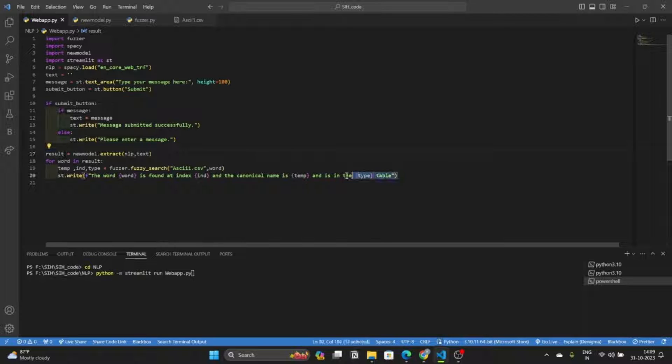This piece of code writes a result identifying the word, its index, canonical name and the table it is associated with. This piece of code is used to host the web interface.